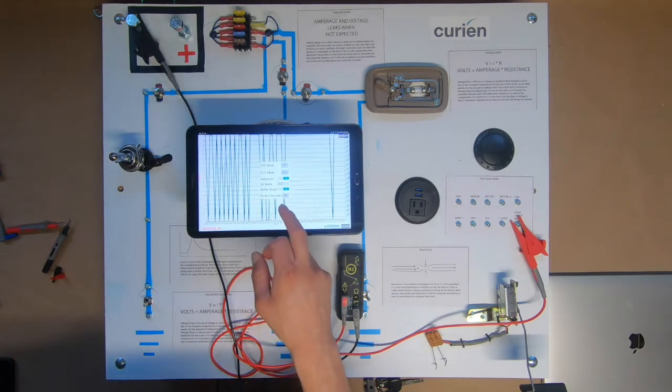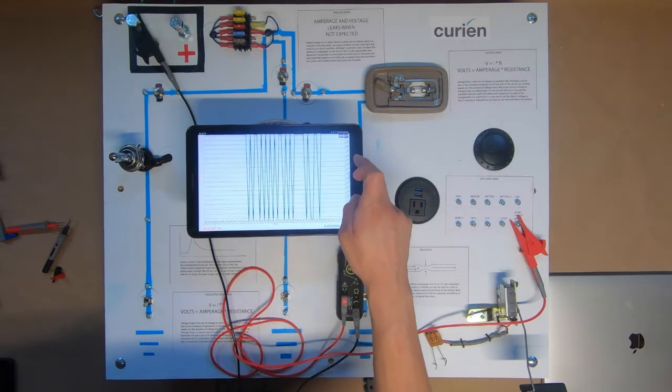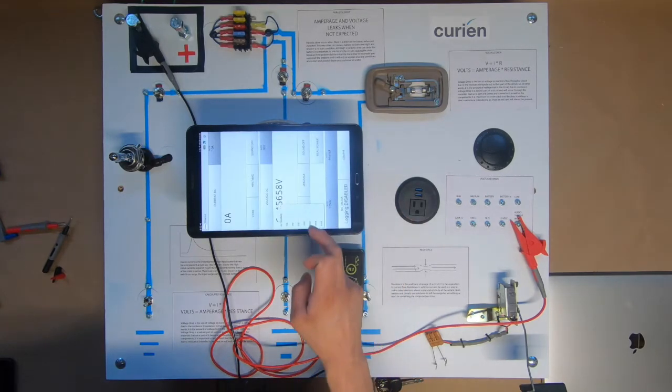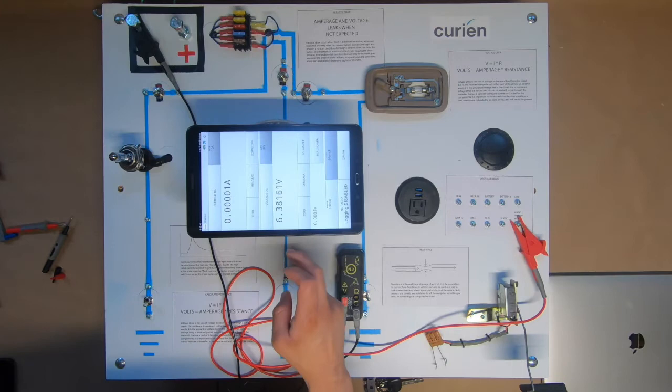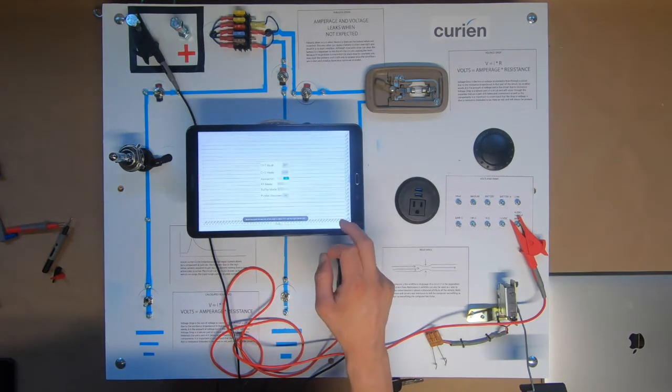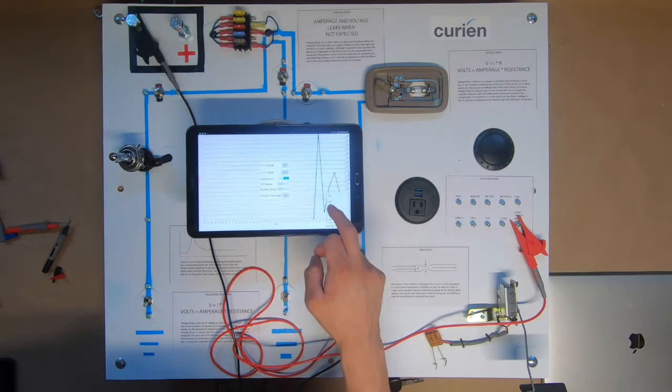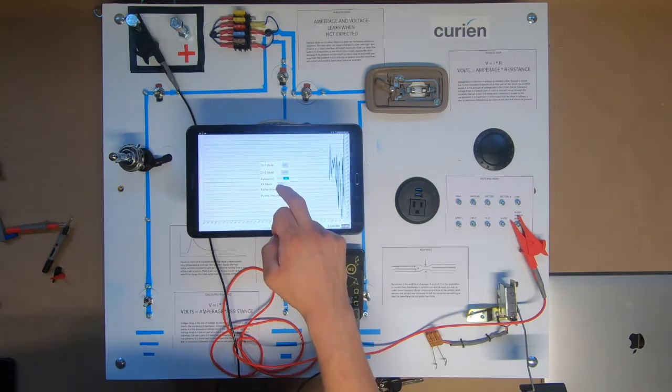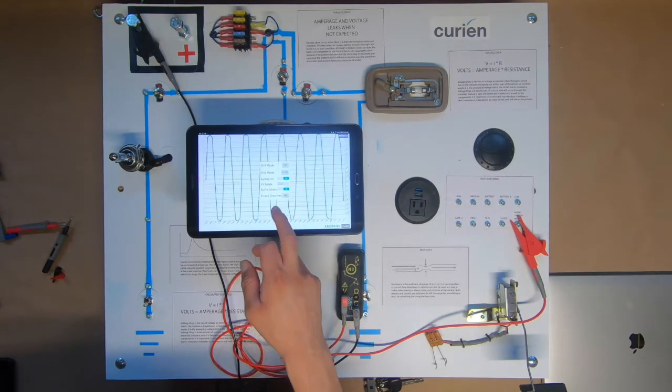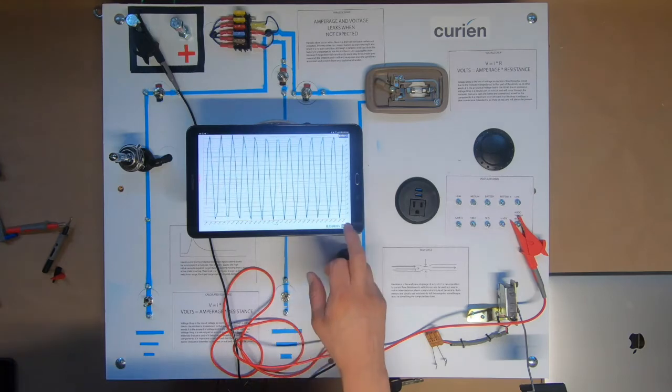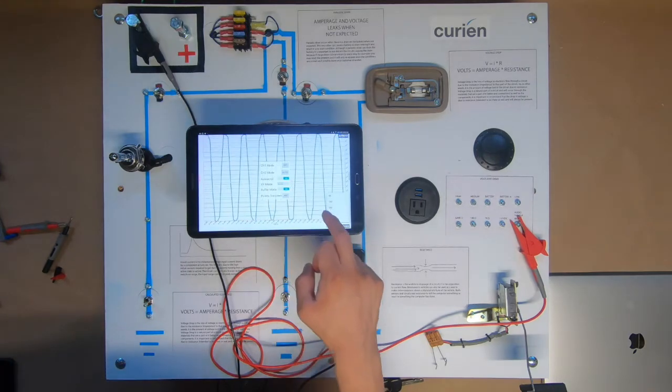And now we are going into the config mode and we are going to be changing the speed, the acquisition rate, at which the N2 is acquiring the signal. Now automatic is going to be at about 125 Hertz. I believe we just changed it to a thousand Hertz, and you can already start to see some differences in what's going on.